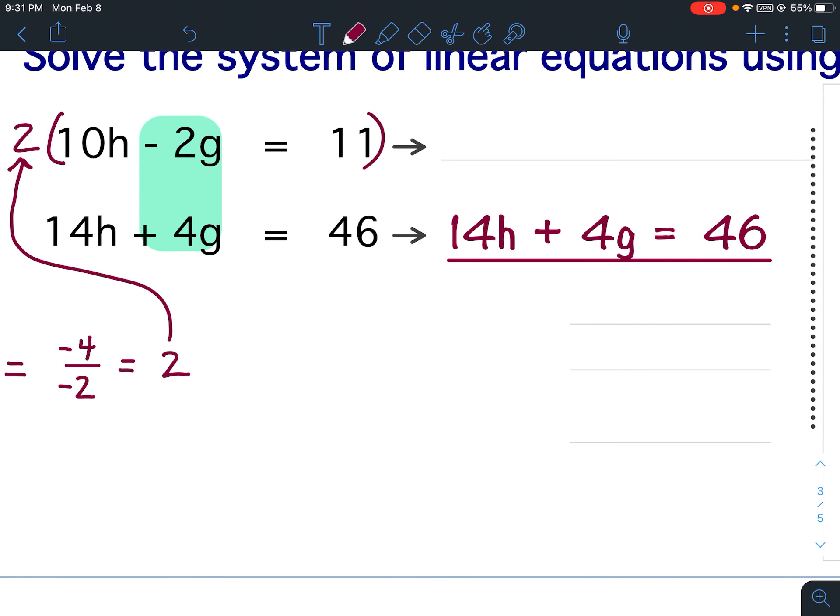So let's multiply this top equation. 2 times 10h would give me 20h. 2 times negative 2g would be negative 4g. 2 times 11 would be 22.